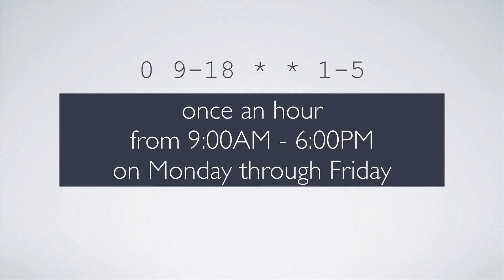An example cron task: if we have 0, 9 through 18, asterisk, asterisk, and then 1 through 5, this will run once an hour from 9am to 6pm on Monday through Friday. We have the minute set to run at the top of the hour, from 9 to 18 in military time, then asterisk asterisk so we don't care about the day of the month or the month, and then it runs on Monday through Friday.